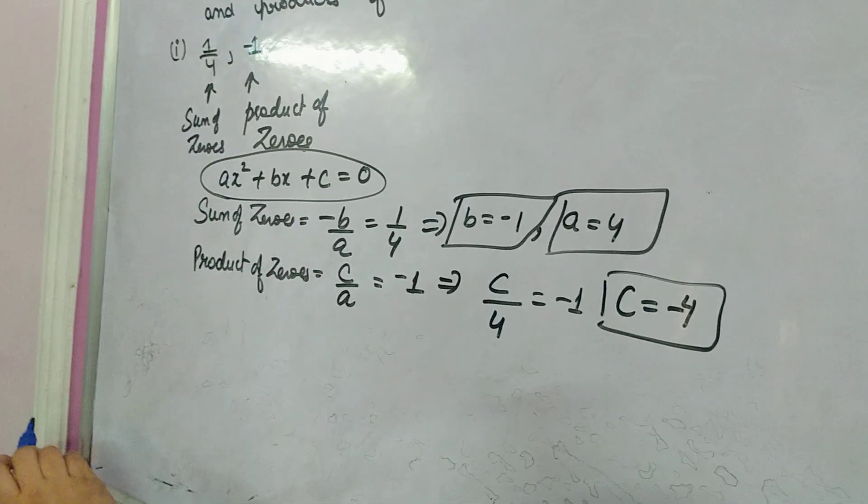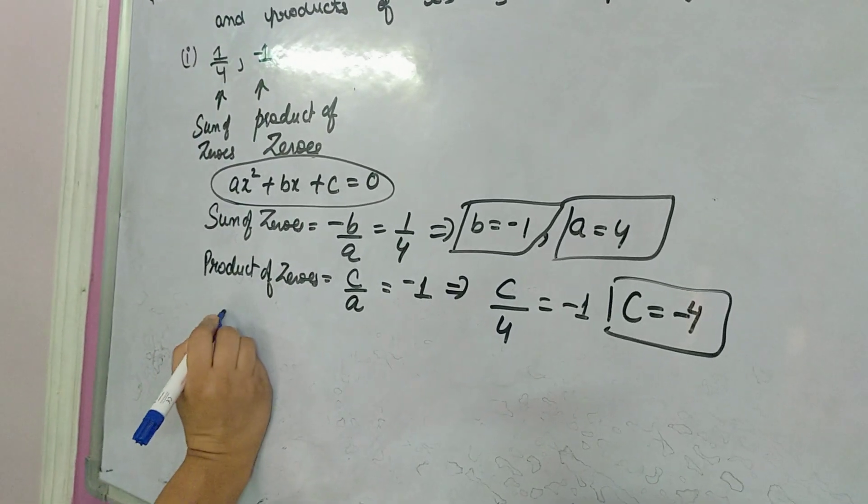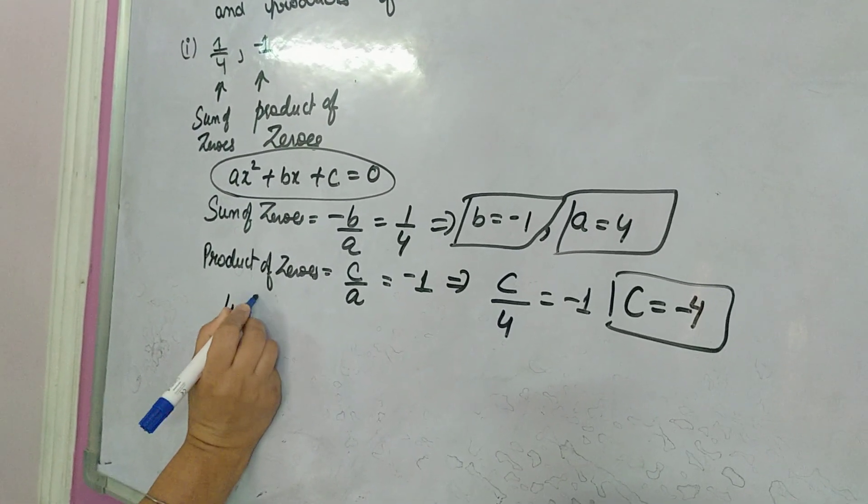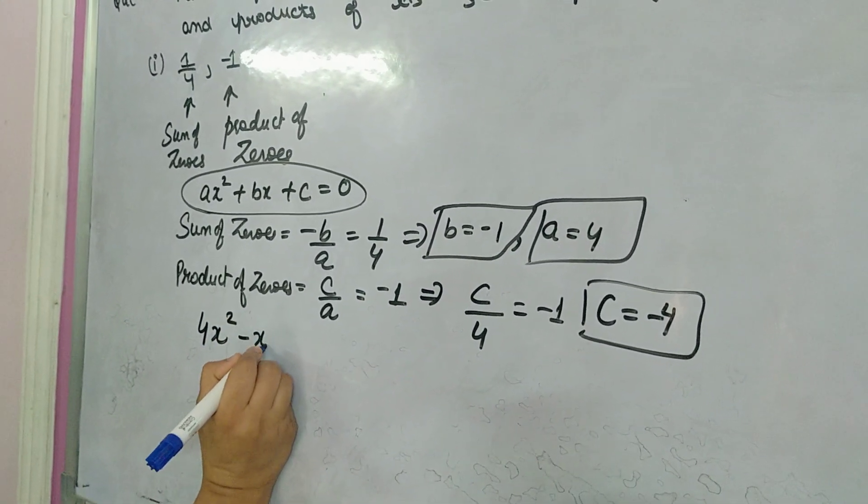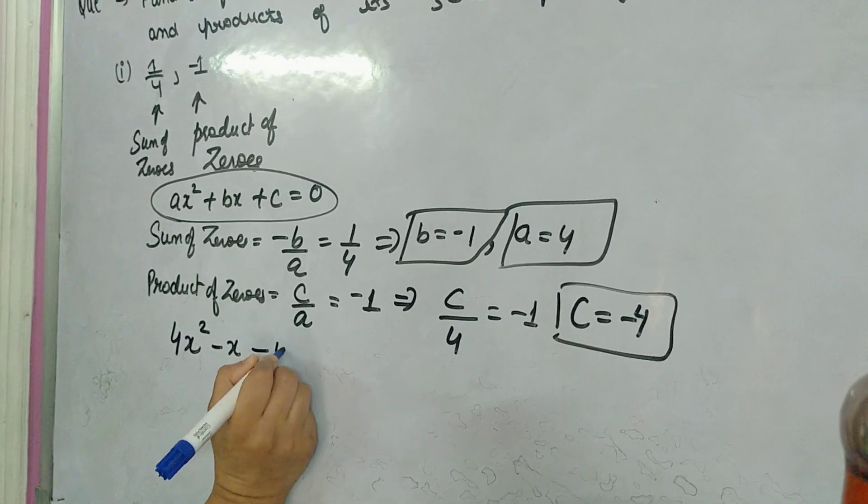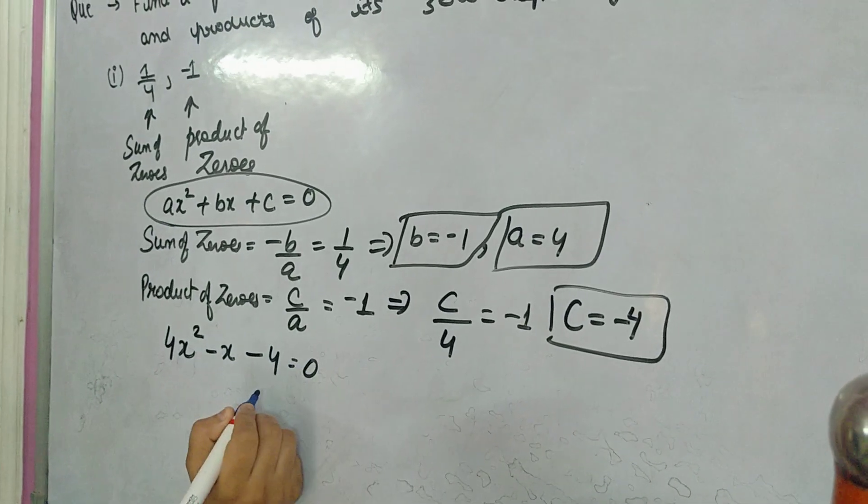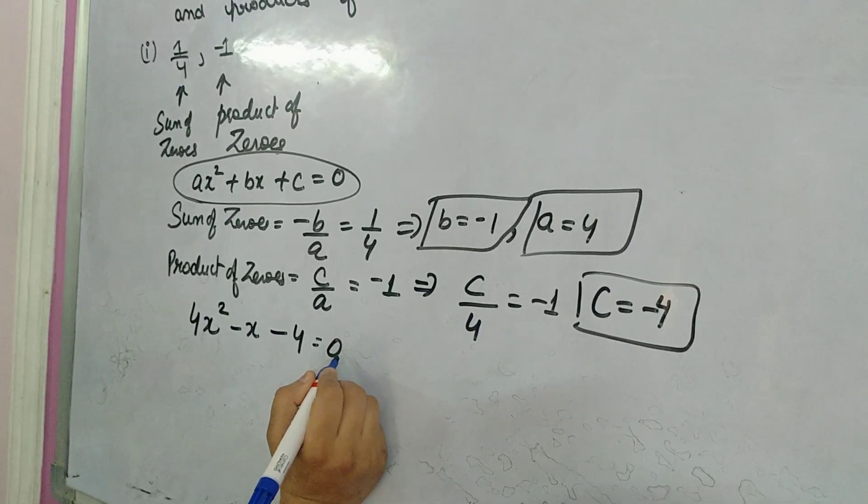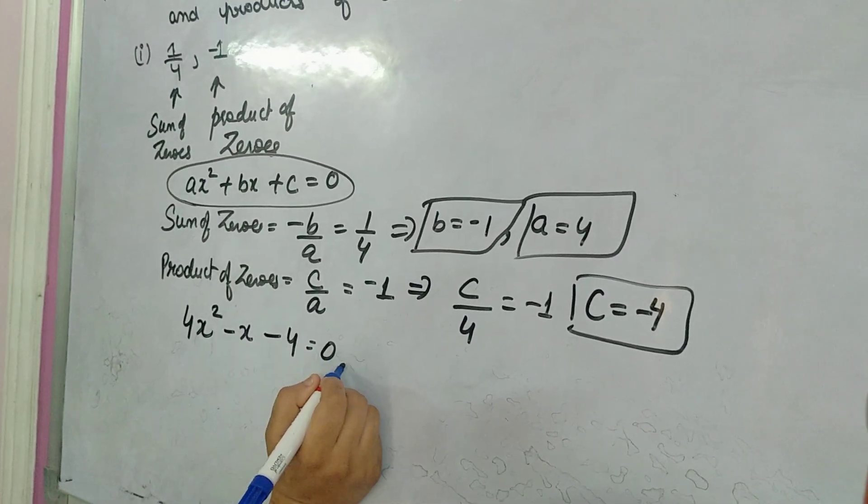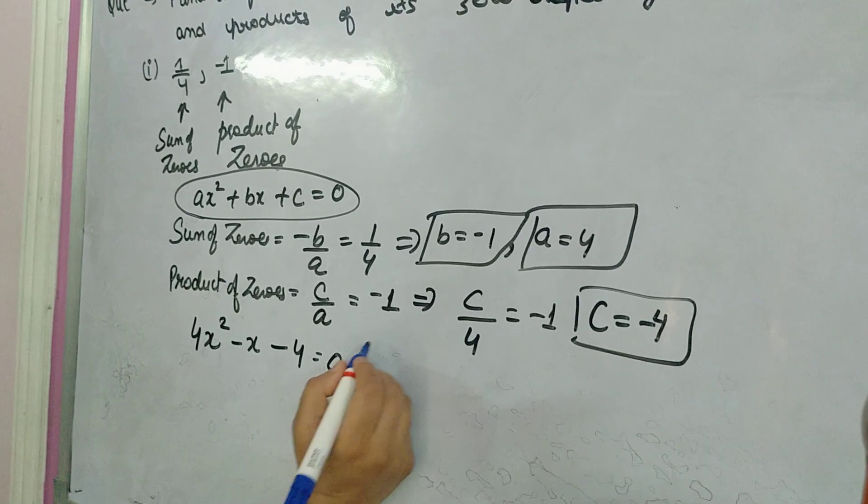Now it is very easy. You have to put these values in the general form of quadratic equation. A is 4, B is minus 1, C is minus 4. So your answer is 4x squared minus x minus 4 equal to zero. This is your quadratic equation, thank you.